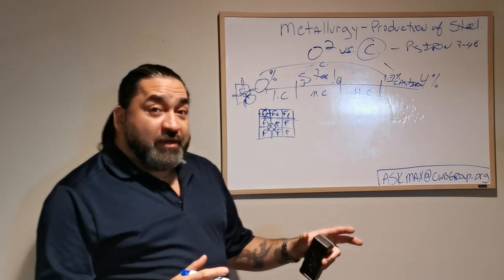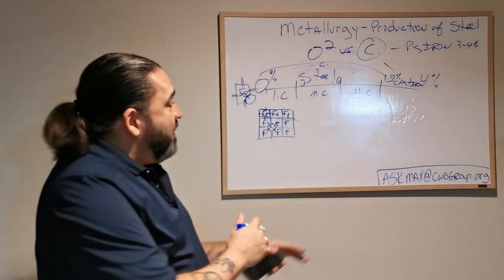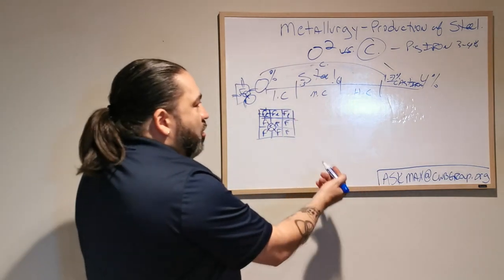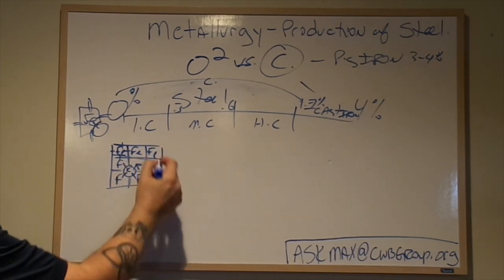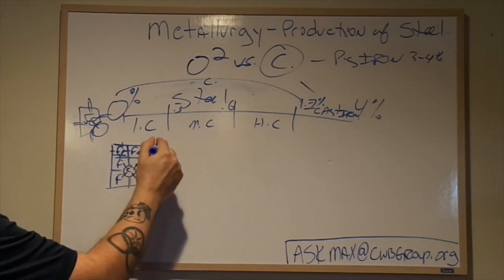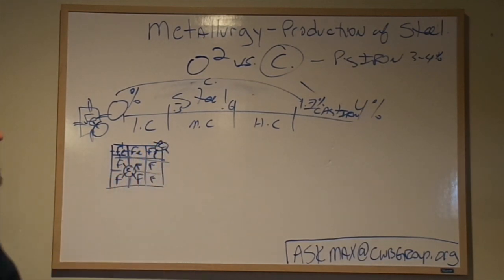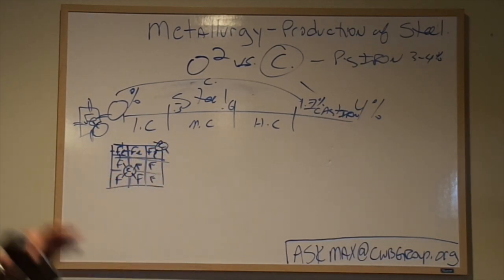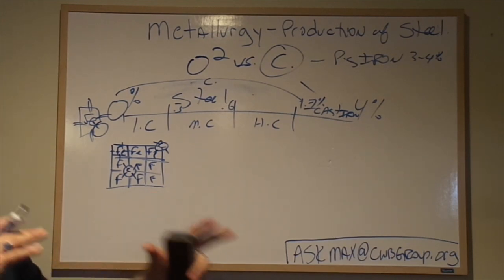When I zoom in on that, you can see the carbon sitting there. Now I have four bonds plus a fifth where it connects. So in this area, I've created an extra set of bonds to those iron atoms. Those extra bonds allow the steel to be stronger — it's got more bonds per square atom, making that structure stronger. In the low carbon setup, a few carbons here and there change the atomic structure enough to create stronger bonds and increase the hardness of the material.